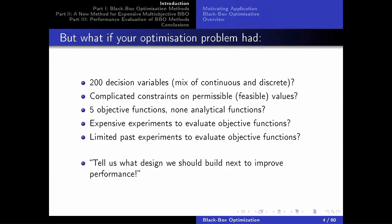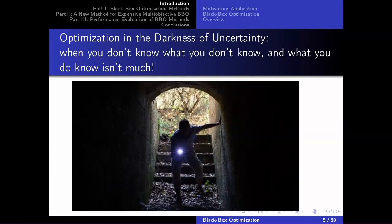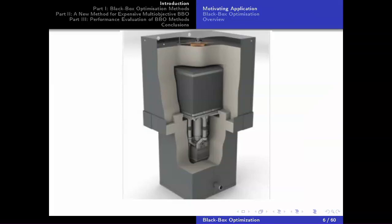Maybe now the title becomes clearer: optimizing in the darkness of uncertainty, when you don't know what you don't know, and what you do know isn't much. I know we have some past experiments but not many, and I don't know the mathematical connection between the decisions I make and the objectives.